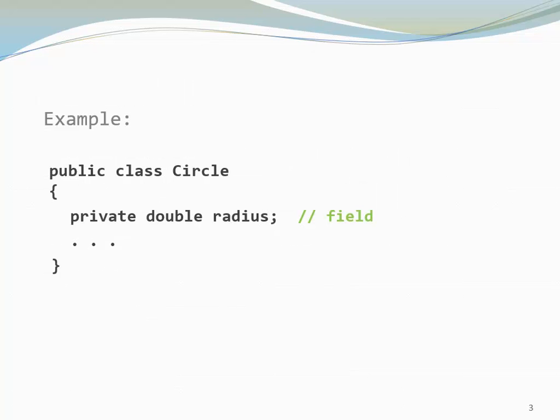Let's look at an example. Here I have a public class Circle which has a private field, the radius. Let's assume I want other classes to be able to read that radius, maybe also to write on it, change it.